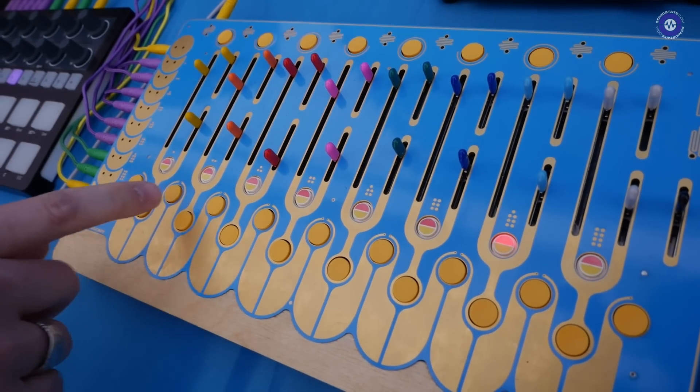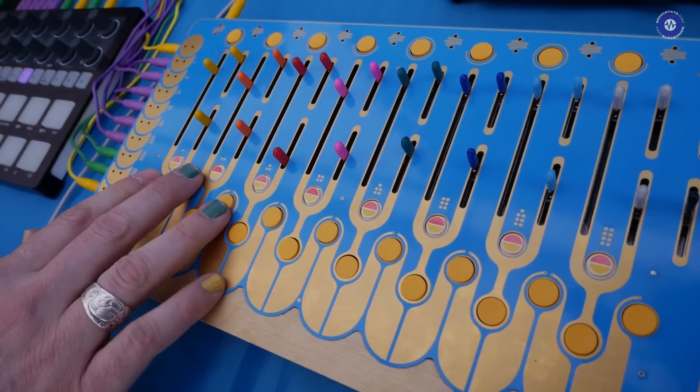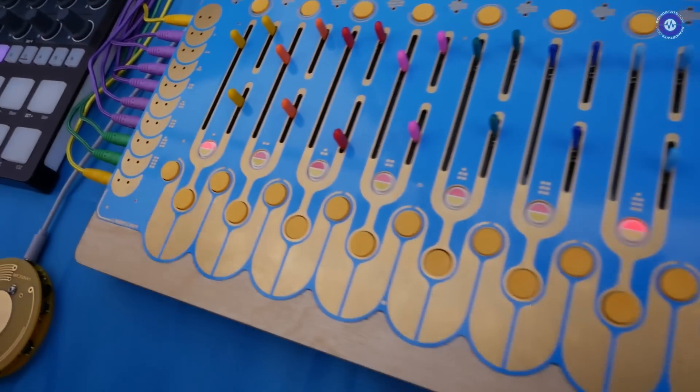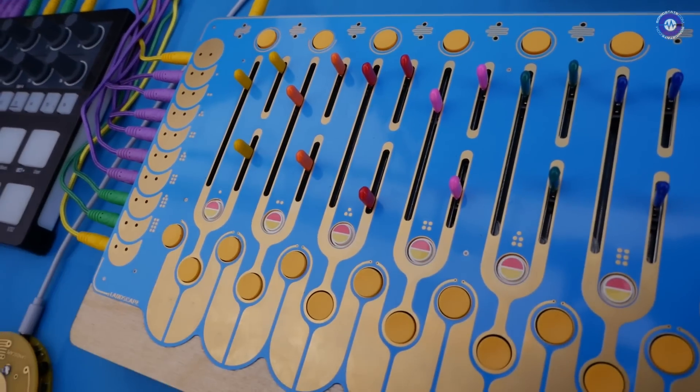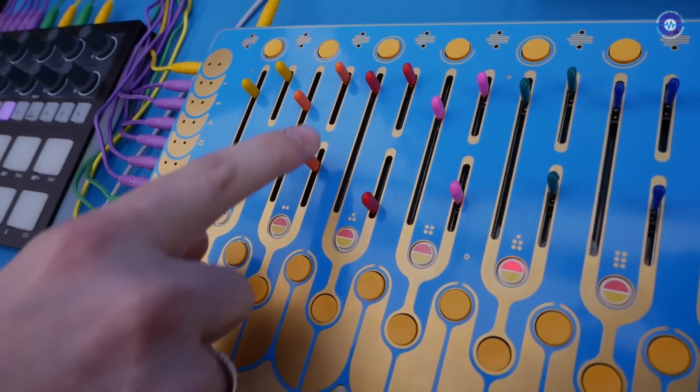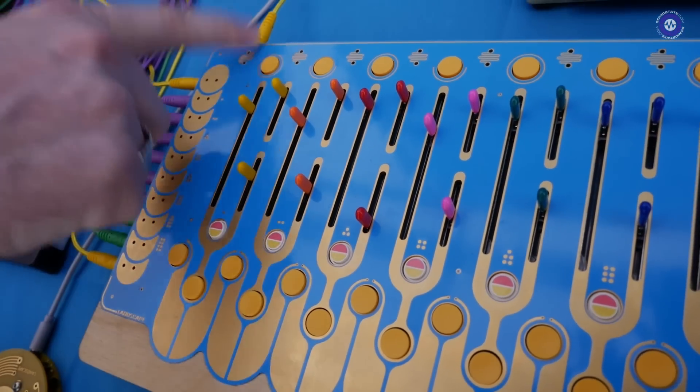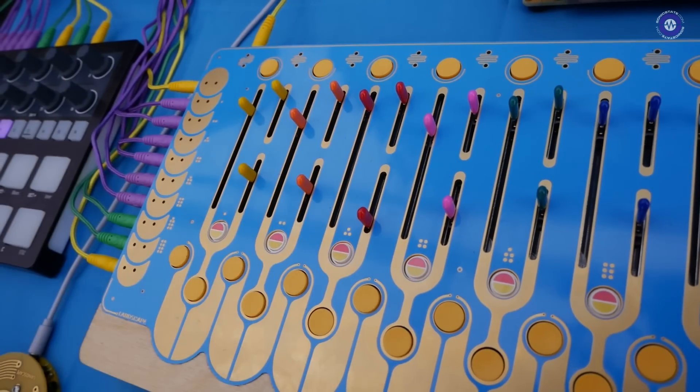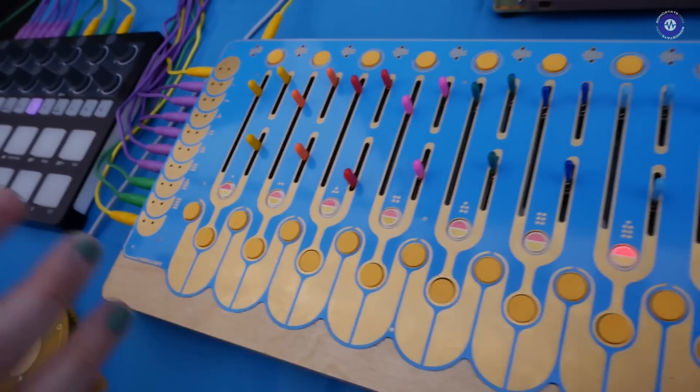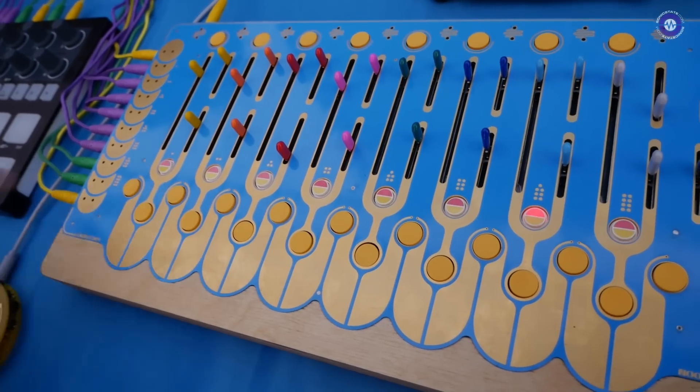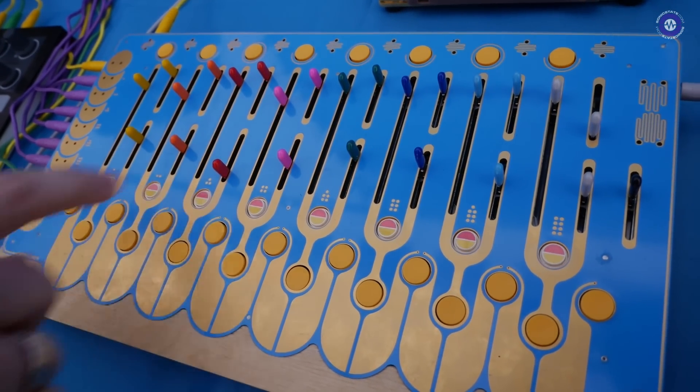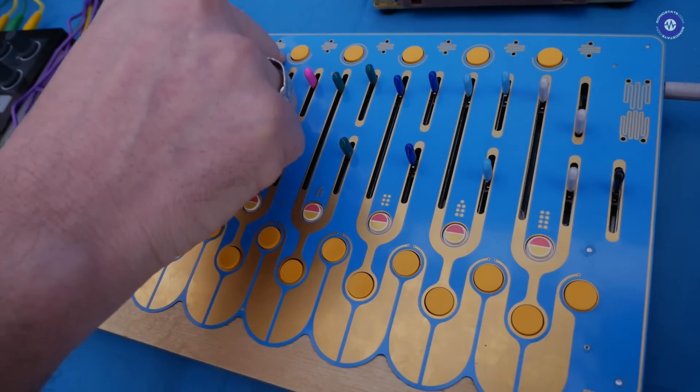You can just hear this one pinging away. You can also send audio into that channel, like a drum machine, and use it as a pseudo VCA or a filter. It's very dirty sounding. Then I start to unmute other channels.